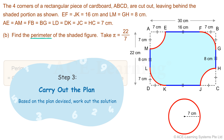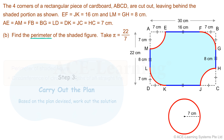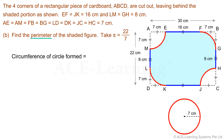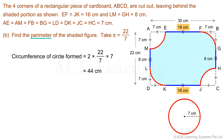Step 3: Carry out the plan. Let's find the circumference of the circle formed first. Its radius is 7 centimeters and pi is taken as 22 over 7. Circumference equals 2 times 22 over 7 times 7, which equals 44 centimeters. Now let's find the lengths of the unknown straight lines on the outline: KJ equals EF, so KJ is also 16 centimeters; ML equals GH, so ML is also 8 centimeters.